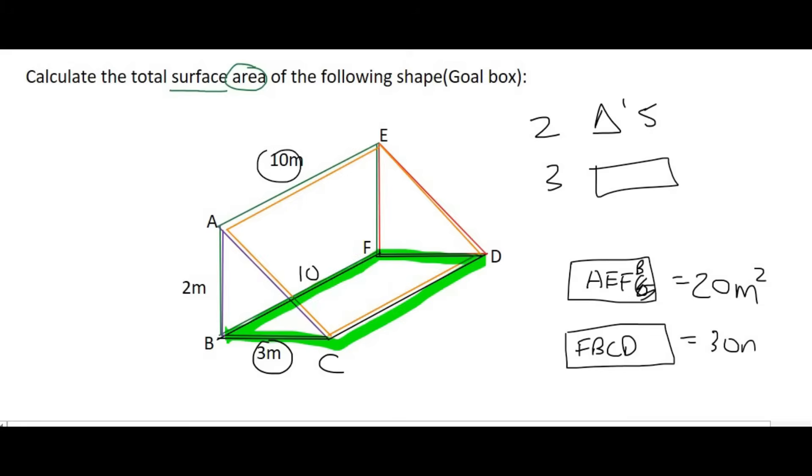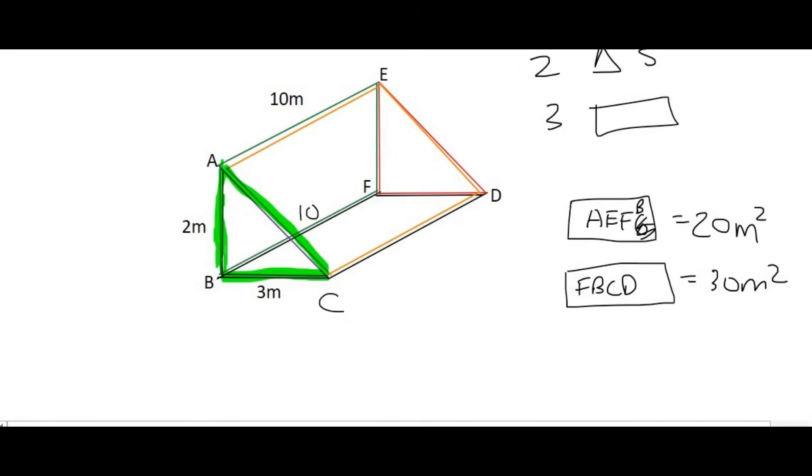And then moving to this triangle, well remember the area of a triangle is half base times height. So triangle ABC, that's going to be half base, well the base length is 3, and the height is 2. And if you work that out, you're going to get a value of 3 meters squared.